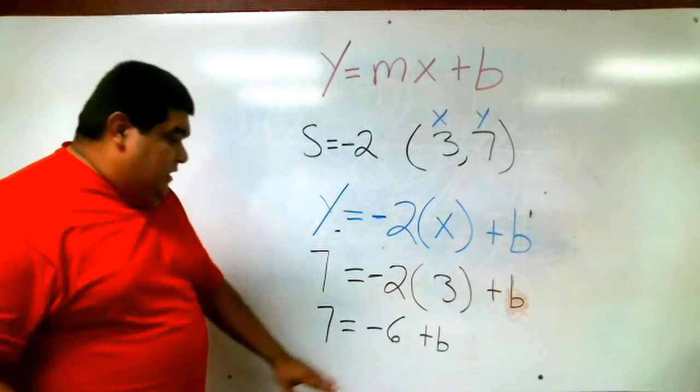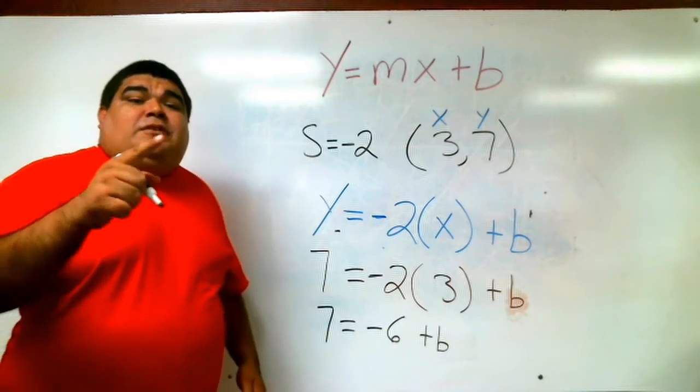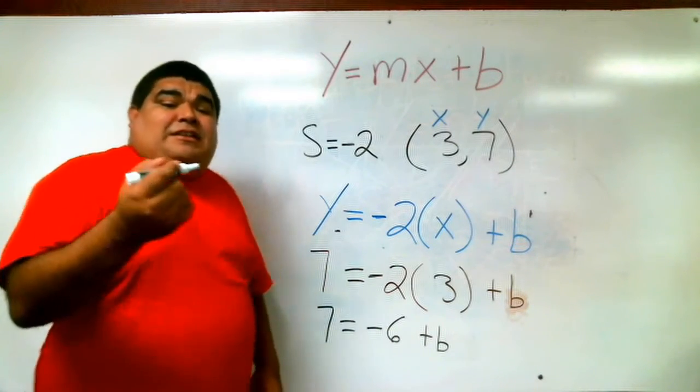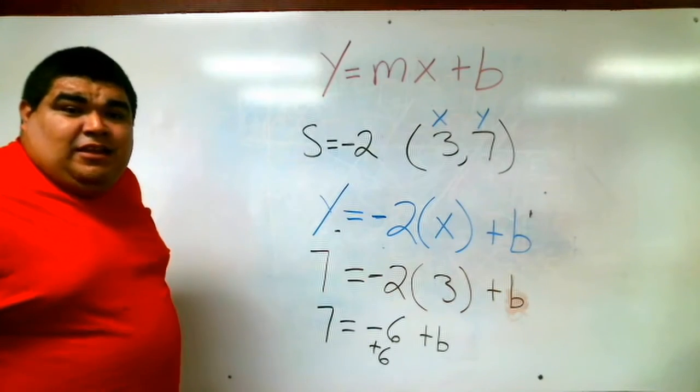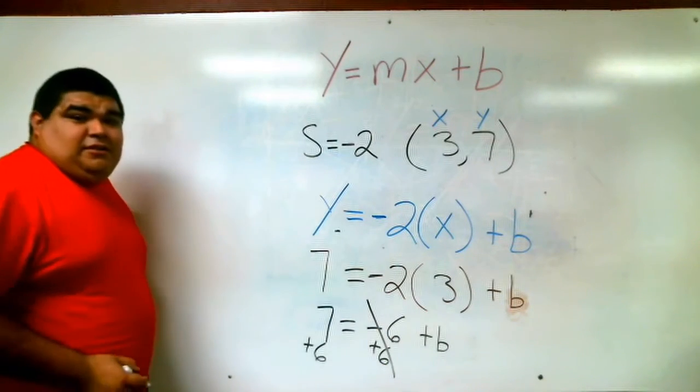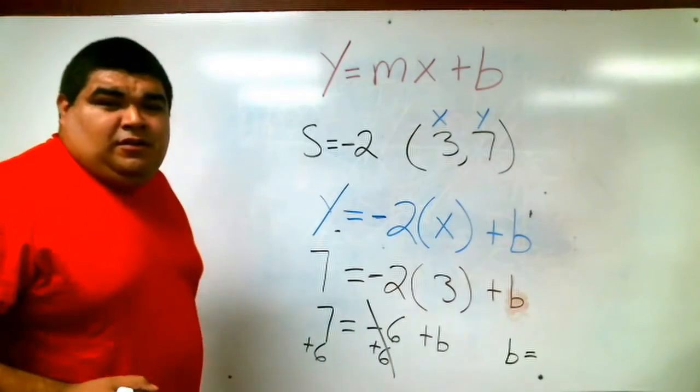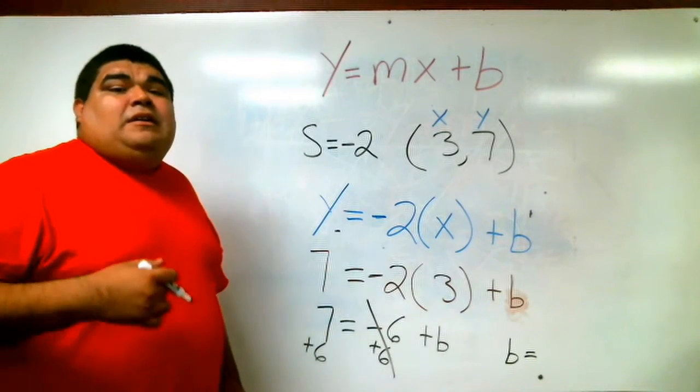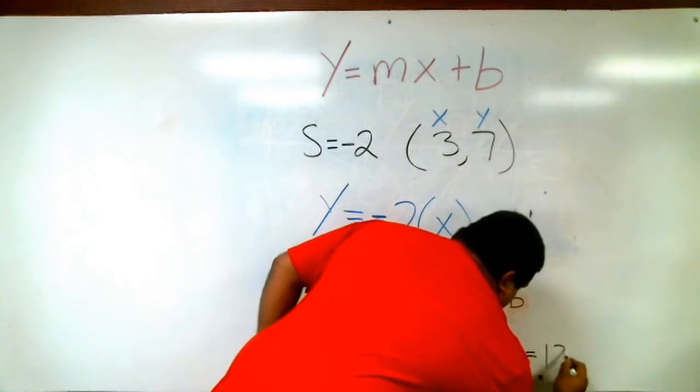We still have one more step, because remember, we have to get that b alone. So we have to move the negative 6 to the other side. The opposite of negative 6 is plus 6. Whatever you do to one side, you have to do to the other. So we have plus 6. Plus 6 is canceled out. So our b equals 7 plus 6 is 13, right? So b equals 13.